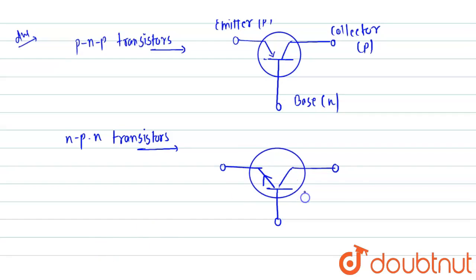Here this is called collector side, which is of N type. This is called base, which is of P type.